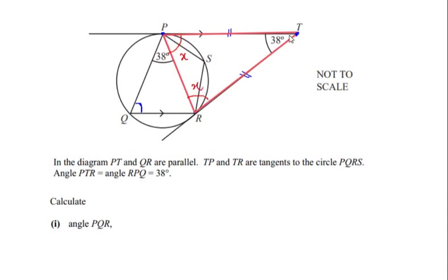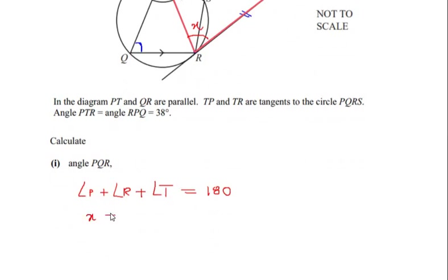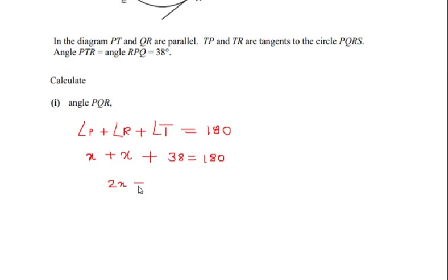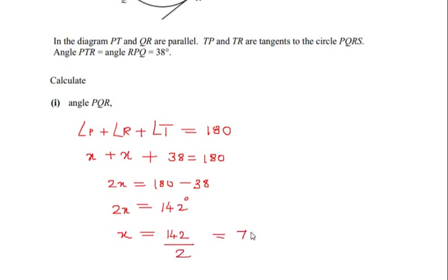Using the angle sum property of triangle TPR: angle P plus angle R plus angle T equals 180 degrees. Substituting — x plus x plus 38 degrees equals 180 degrees, so 2x equals 142 degrees, giving x equals 71 degrees. Therefore angle TPR and angle TRP are both 71 degrees.